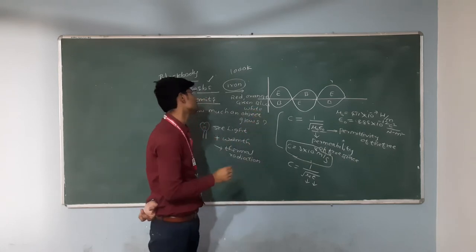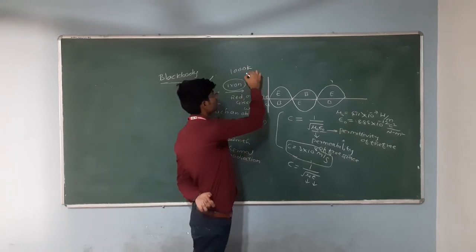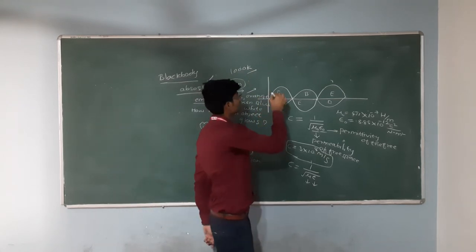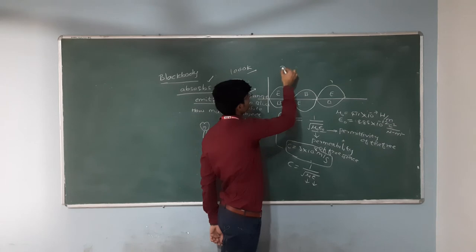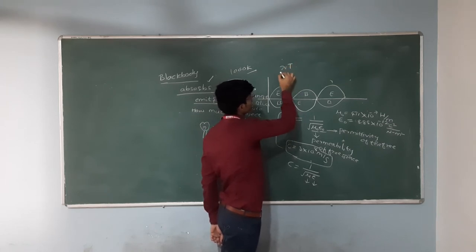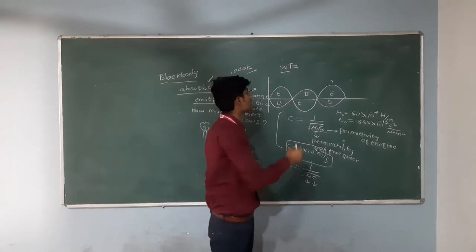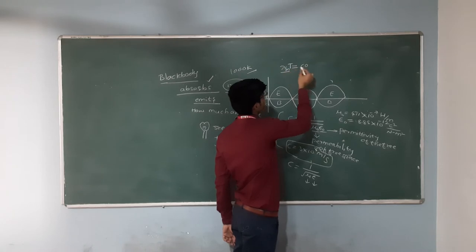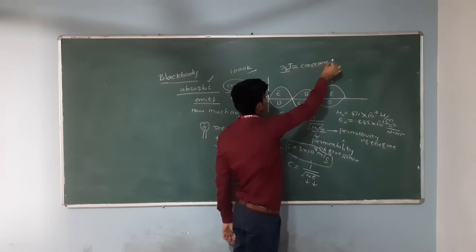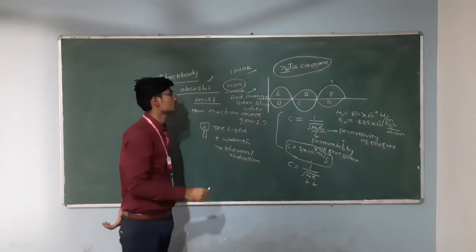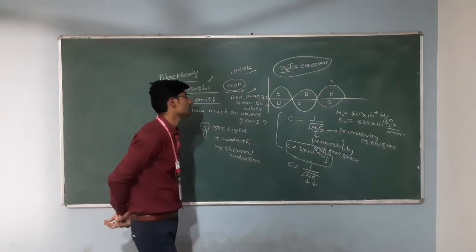We see that temperature and color have some relation. At a given temperature T and at a particular wavelength lambda, the object emits the maximum intensity of light. This relationship is λ_M × T = constant, which is nothing but Wien's displacement law, developed by Wien.